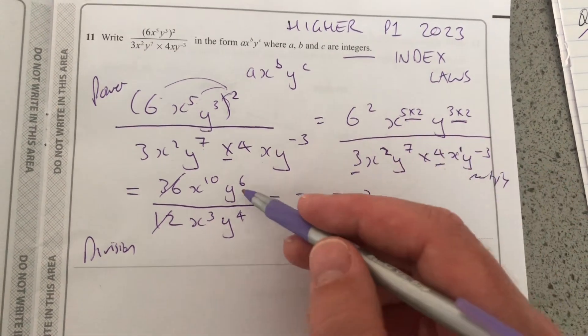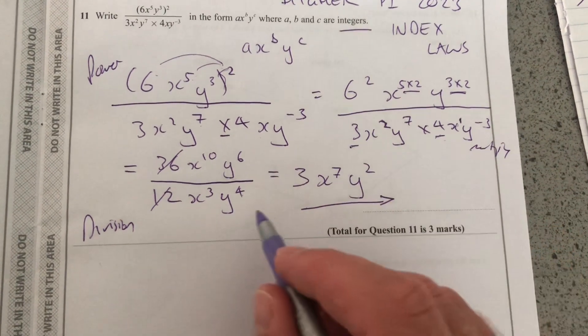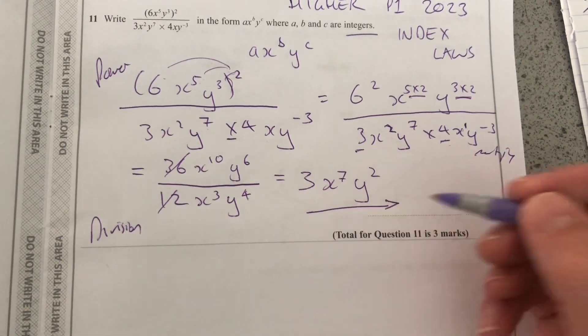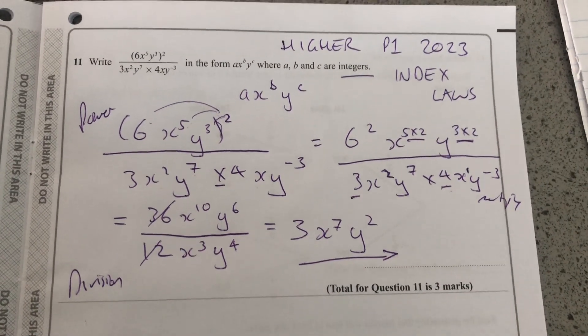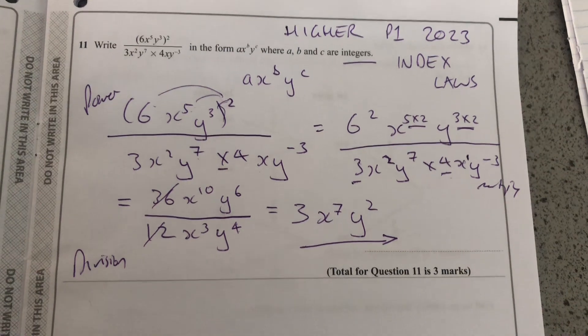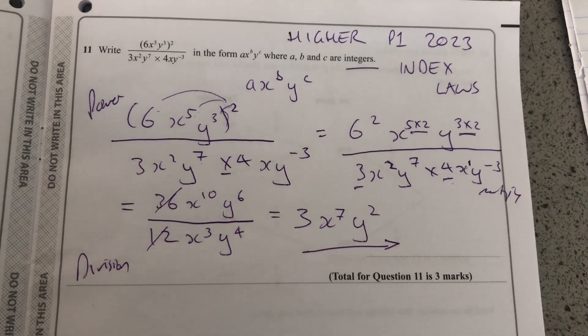It should be the same as cancelling. Because if you had 6 Ys multiplying over 4 Ys, you'd be left with two of them. That's index laws for GCSE Maths. Thanks for watching. Don't forget to like, subscribe and share. And good luck for those writing exams.